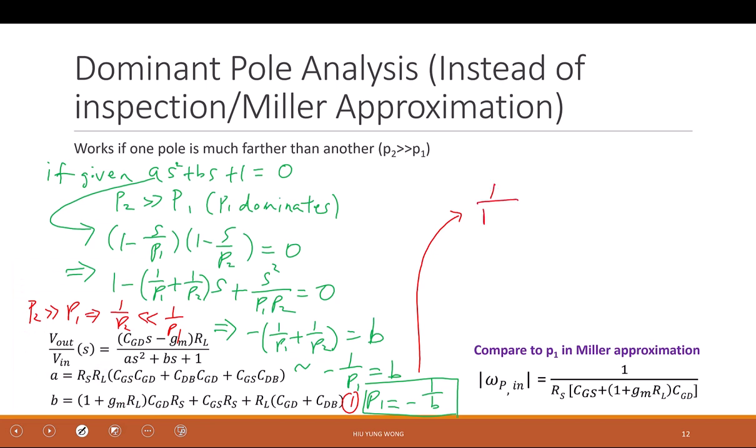So how about P2? I know one over P1 times P2 equals to A. This time I cannot ignore P2 because it's multiplication. Even P2 is much larger than P1, I cannot do any simplification.